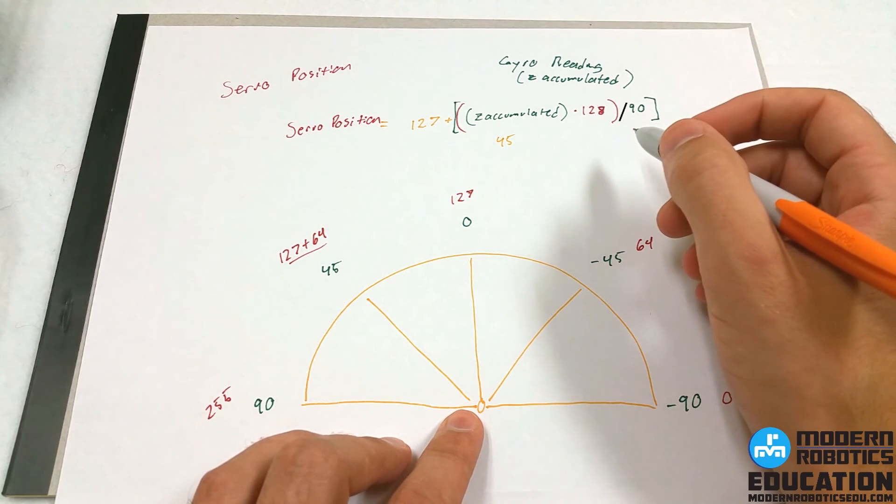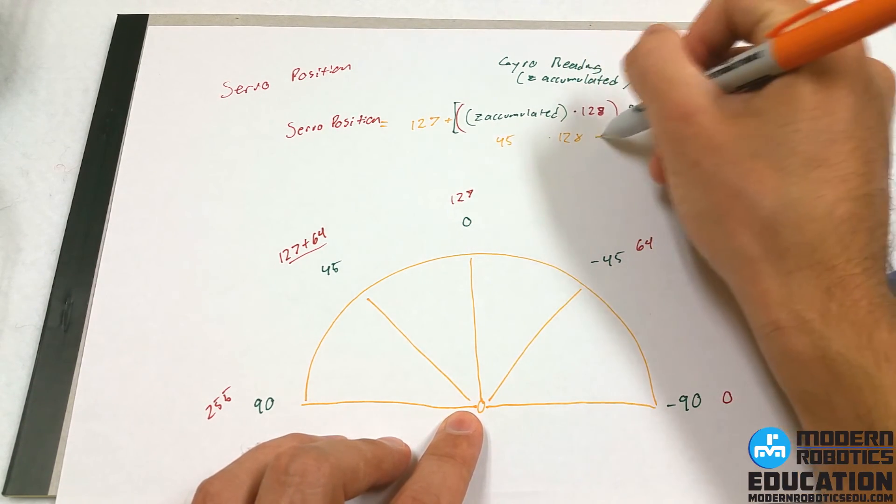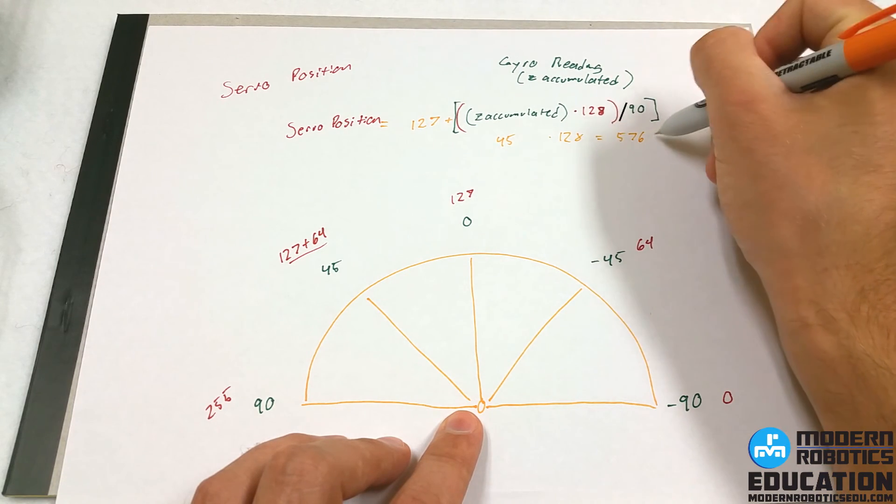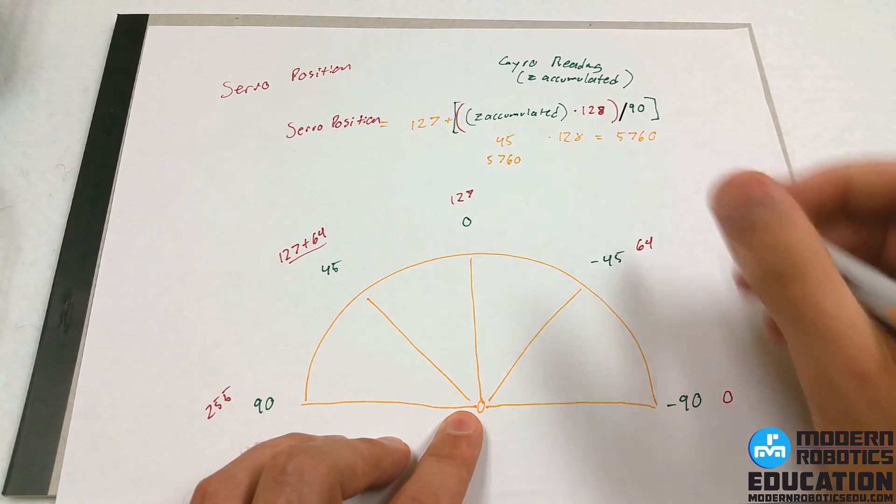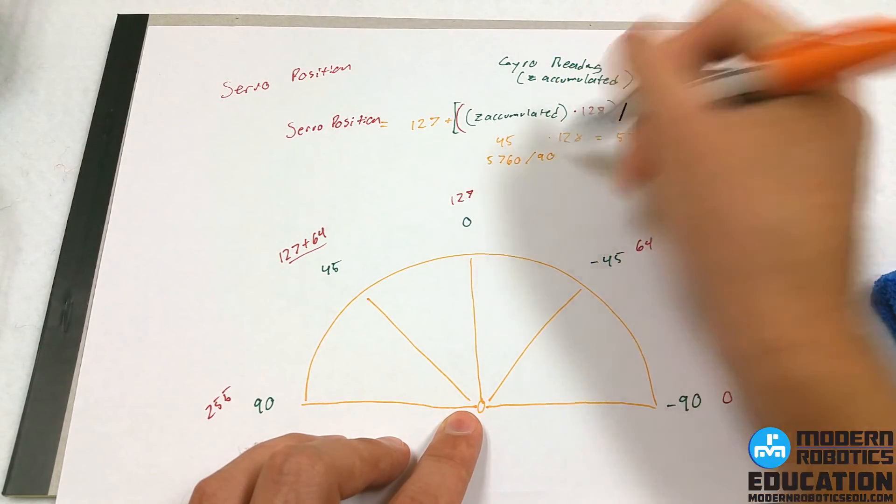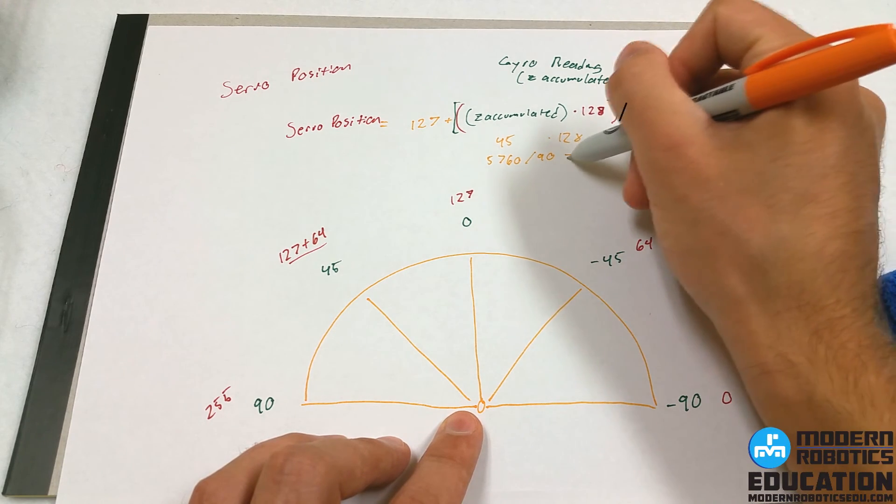Times 128 is 5760. 5760 divided by 90, because that's this guy, is 64.